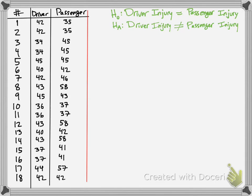You're simply going to compare the data. In mathematics, difference means subtraction. So you want to see: what's 42 minus 35? That's a positive number. What's 34 minus 45? That's a negative number. You go all the way down and do that. Now here's one thing to note: if you get the same number — say 45 minus 45, which is zero — we pretend like that data point never happened, you can just cross it out. That means your sample size will decrease.